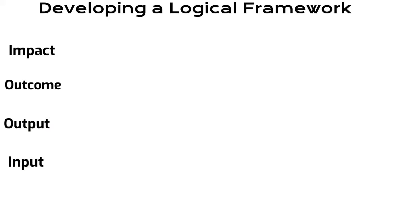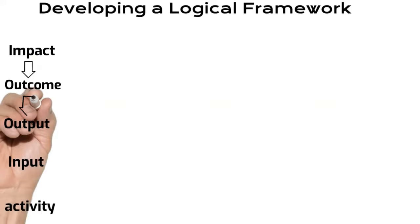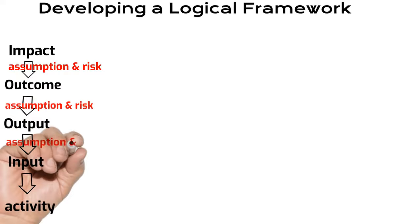But how do you develop a logical framework? To create one, we need to link the impact, the outcome, outputs, and the activities with a logic. We usually start with the impact or the goal and come down towards the activity. At each step, we also have the assumptions and the risk.